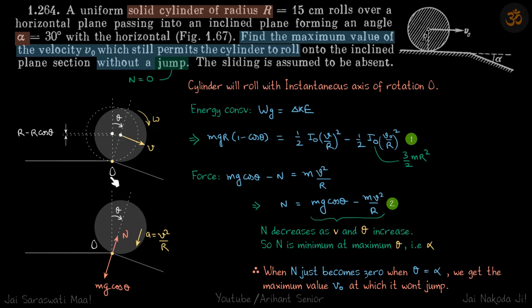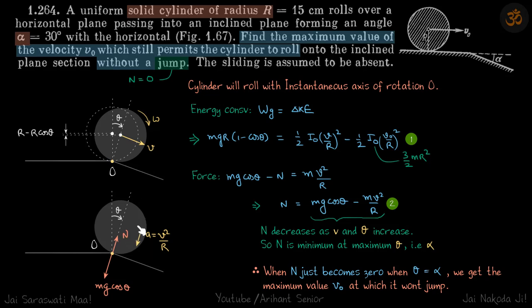This is similar to what we did in the previous problem 1.263, where we assumed the sphere had rolled by angle theta and balanced forces along the line joining the center and the point of contact — that is, we wrote F = ma along that line. Just like in that problem, we will get velocity from energy conservation and then write mg·cosθ - N = mv²/r, and set N = 0.